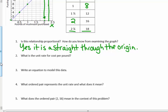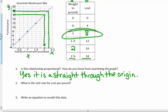What is the unit rate for the cost per pound? Well, here it is on the table. When X equals 1, here it is on the graph. So, it's $8 per pound.